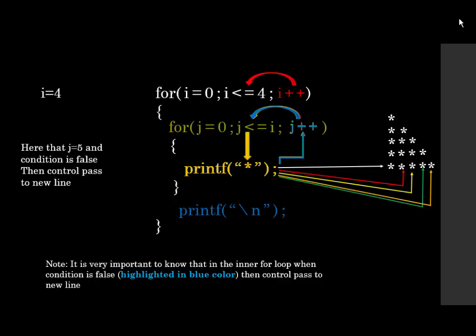Note that when the inner for loop condition is false, control passes to the new line. When the outer for loop condition is false, the loop terminates. Thank you.